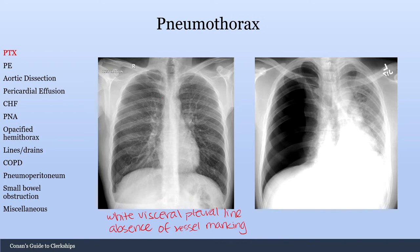The big thing with pneumothorax is that you want to check if the patient is having a tension pneumothorax — a pneumothorax that has enough pressure to cause a mediastinal shift. You can see the heart is being pushed to one side of the body, which can cause hemodynamic instability and is life-threatening. The way to tell if a patient is having a tension pneumothorax is to check for mediastinal shift.